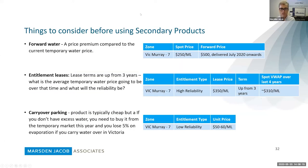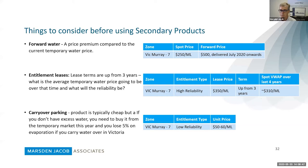When buying forward water, there's typically a price premium compared to current temporary prices. For example, looking at Vic Murray Zone 7, if the spot price is $250 per megalitre, buying forward water at this time is about $500 per megalitre with delivery from July 2020 onwards. So you're paying a price premium to have guaranteed access to that water.